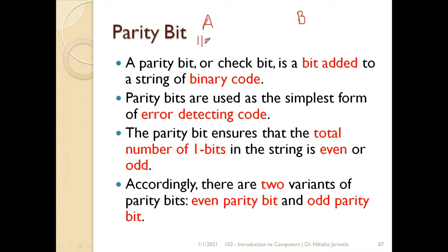The data being sent is: 1, 1, 0, 1, 1. This sequence of bits has to be sent to computer B over the network. Now suppose there was a disturbance in the network on the way to the other computer.